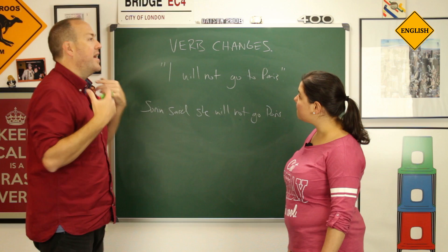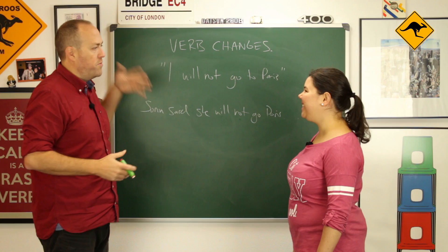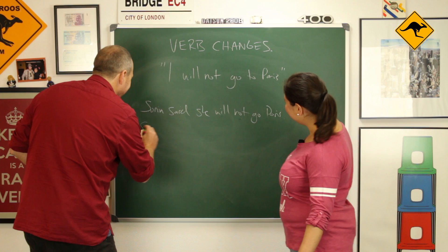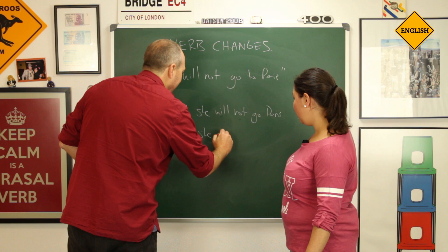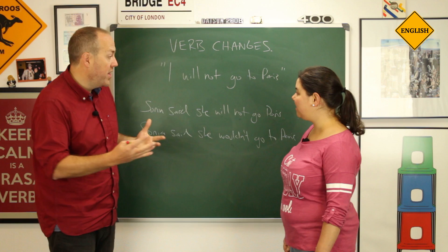But imagine I tell my friend in two years and all this trip about Paris is long in the past. Now you're rich. So: Sonia said she wouldn't go to Paris. Will not, in the past, becomes would not. By changing the tense, we can give some extra information.